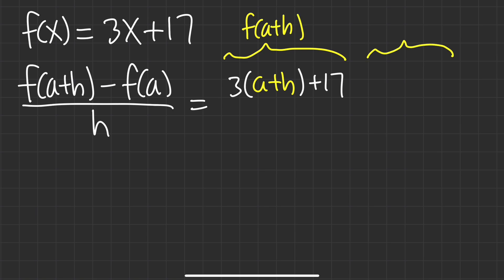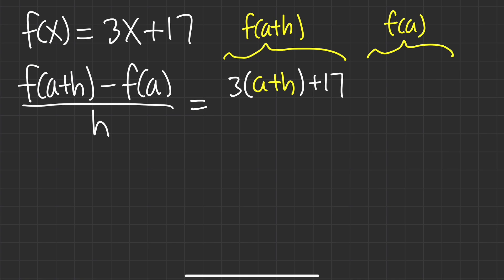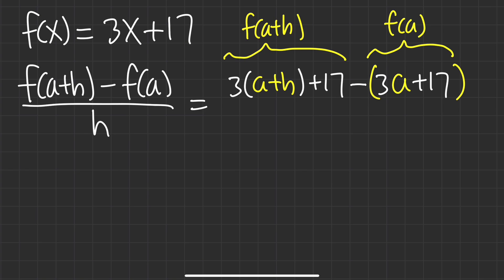For the next part we need to have f of a, and that's just plugging a into the x, so we will have 3 times a and then plus 17. Now we are going to subtract — make sure you subtract both of these. Make sure you put f of a in parentheses because it has two terms.